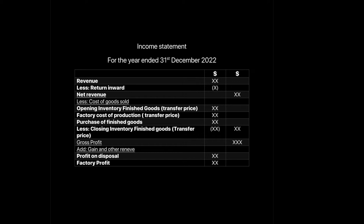Continuing our discussion: we've learned that the firm has to recognize a factory profit, which is the gain made by setting up the manufacturing unit. This also requires us to calculate the transfer price, which is the market price of these goods. If we recognize cost of production at the transfer price, it requires us to also value opening and closing inventory of finished goods at the transfer price. The firm will have to convert its inventories to their market values.